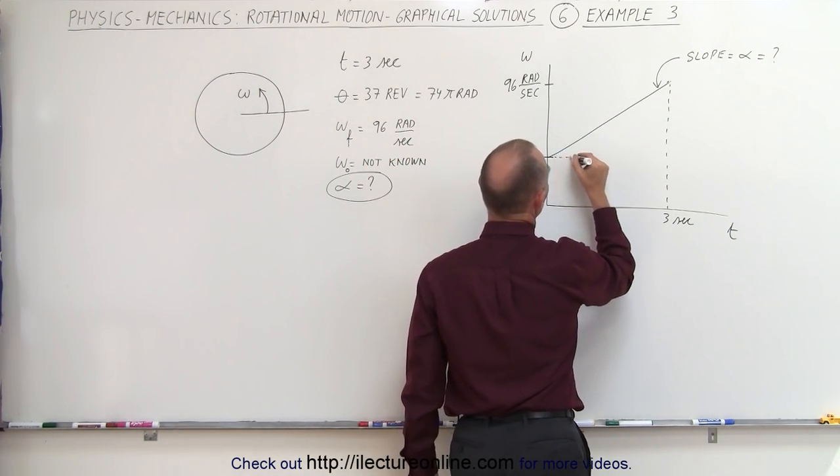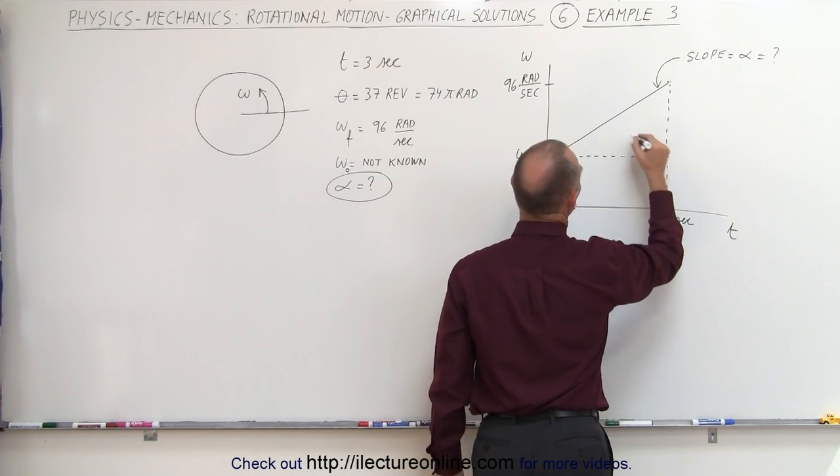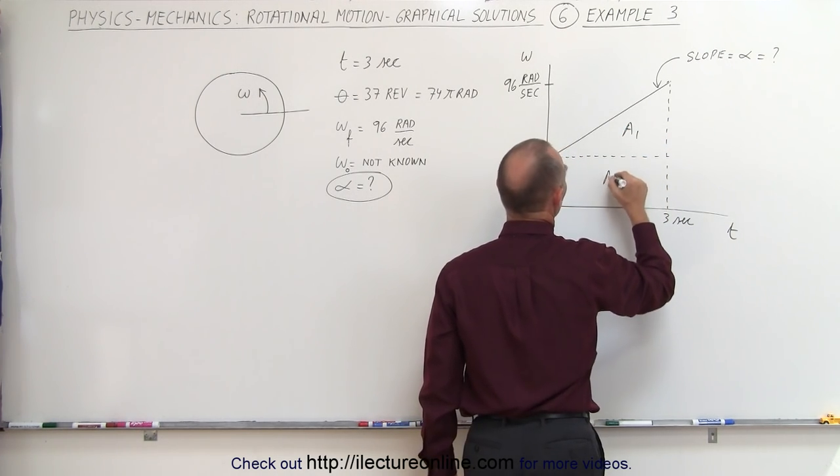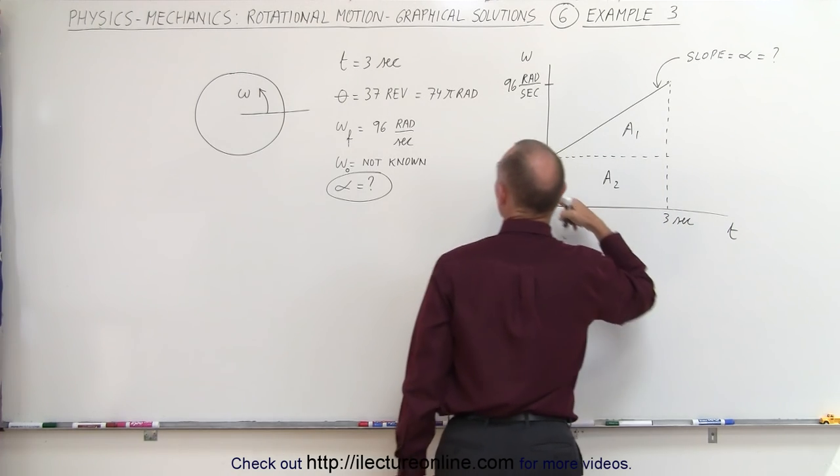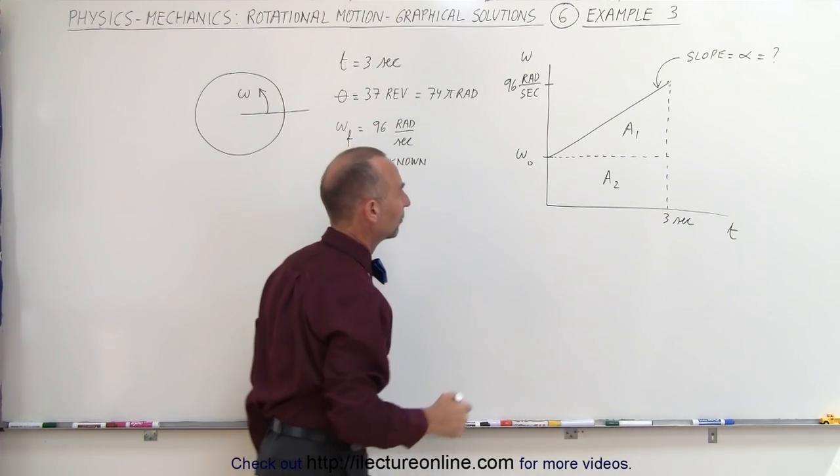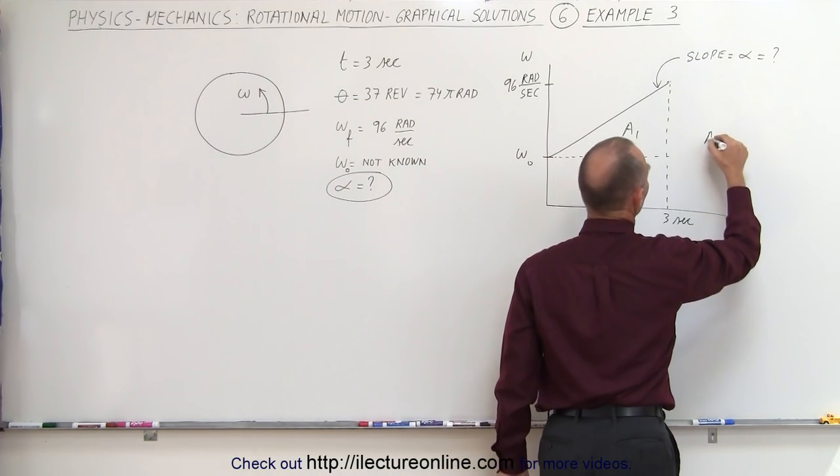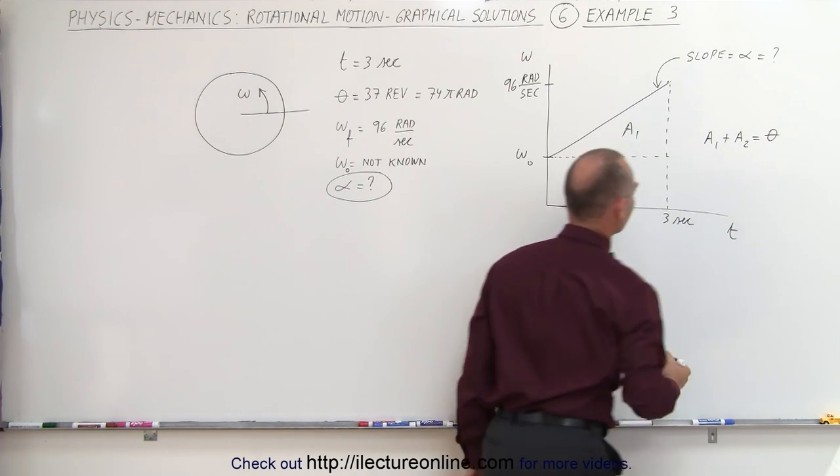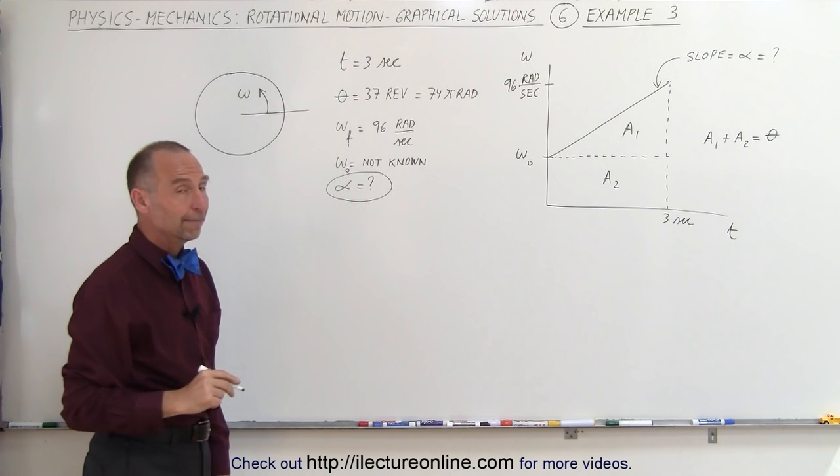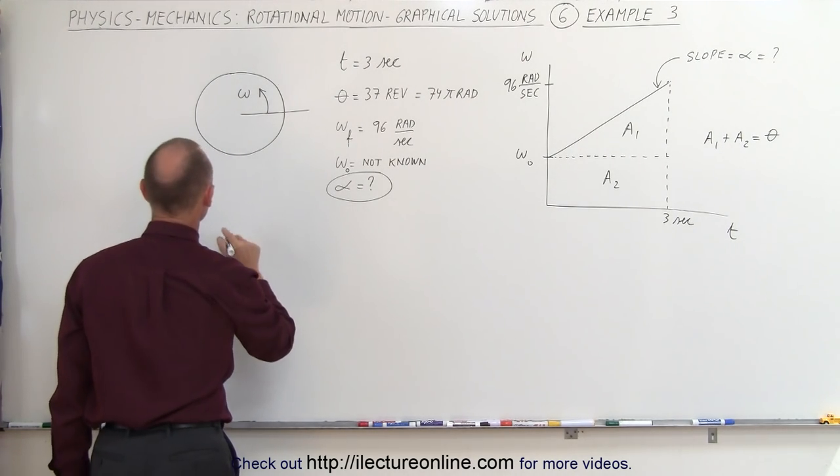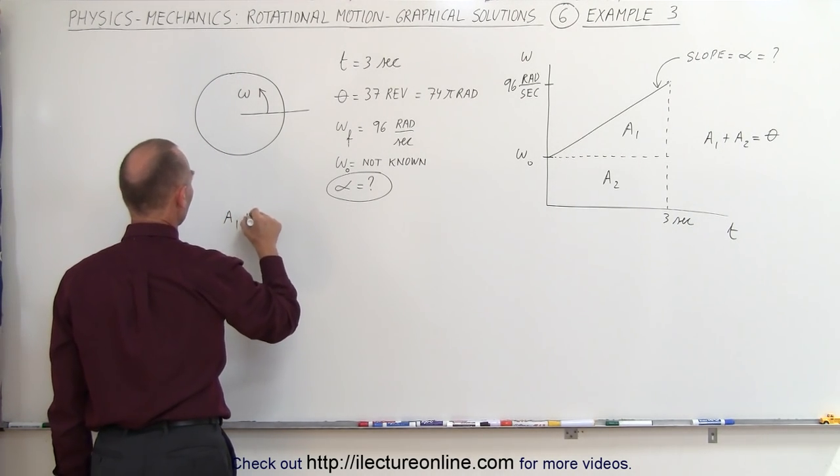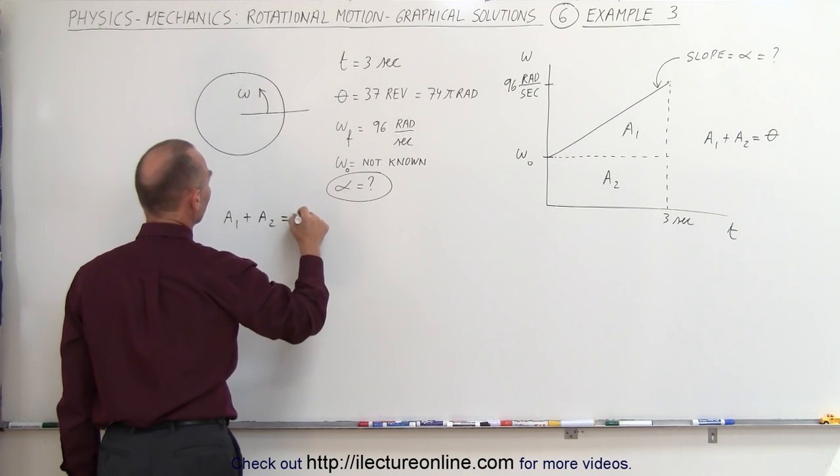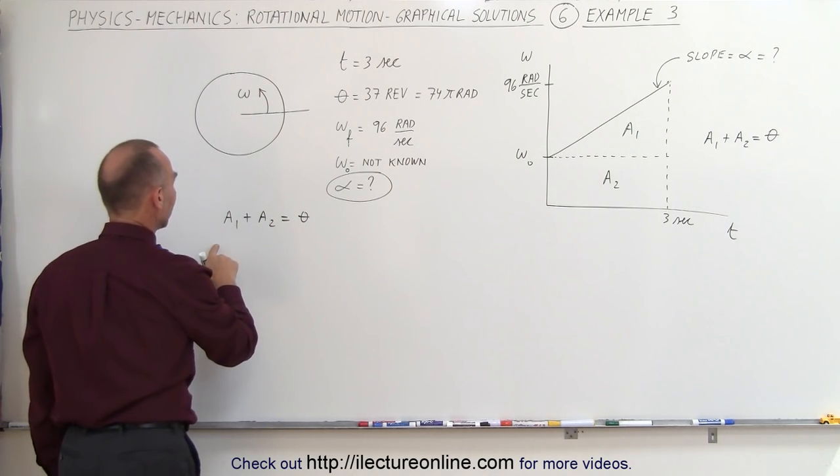But we do know the total distance covered which means the total area under the curve is known. Now we have to divide this area up into two areas. Let's call this area 1 and let's call this area 2 and together they should add up to the total distance covered. So in other words A₁ plus A₂ together equals theta and theta is a known quantity.